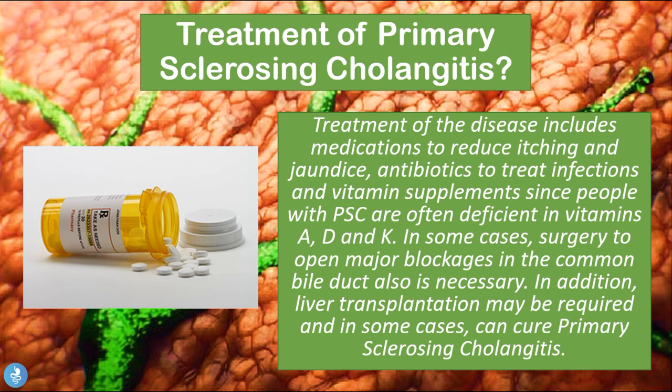So how can one go about treating primary sclerosing cholangitis? Treatment includes medications to reduce itching and jaundice. Antibiotics can be used to treat infections, and vitamin supplements are often needed since most people with PSC are deficient in vitamins A, D, and K. In some cases, surgery to open major blockages in the common bile duct may be necessary, and liver transplantation may be required, which in some cases can cure PSC completely.